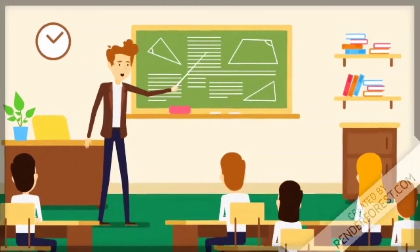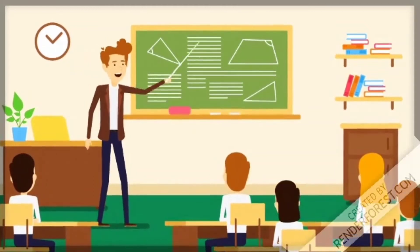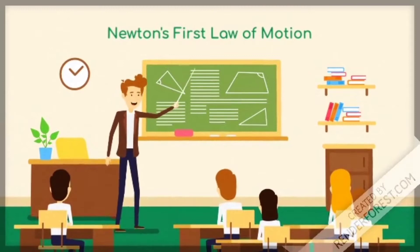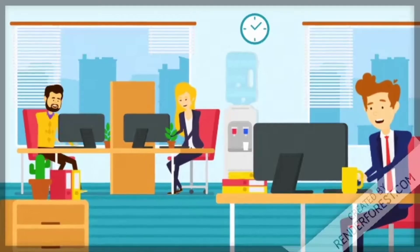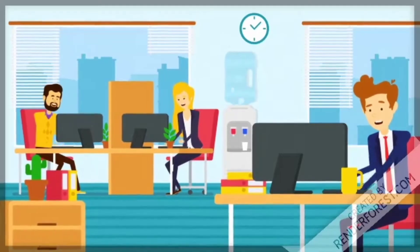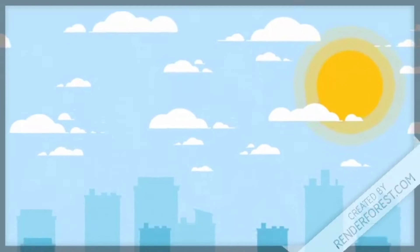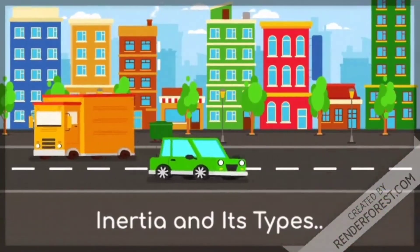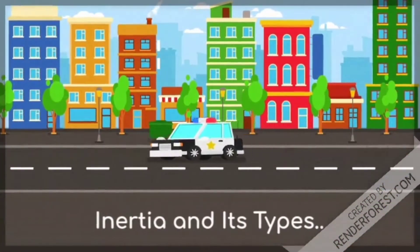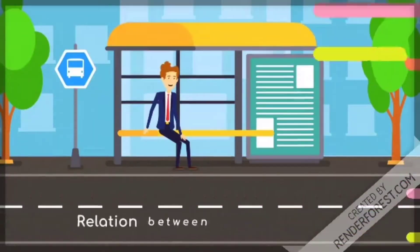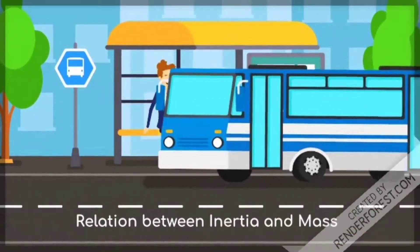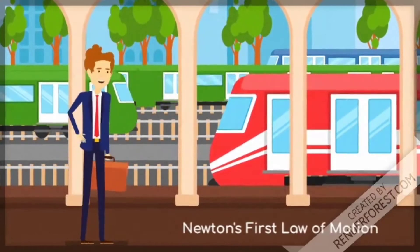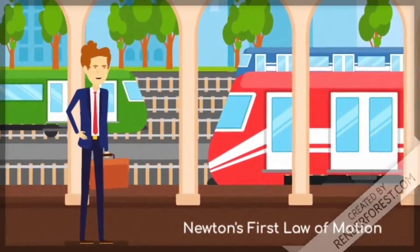In the last video, we discussed about Newton's first law of motion. If you have not seen it yet, go and click on the i button. Today, we will talk about inertia and its types. Also, we will see the relationship between inertia and mass, which is the extension of Newton's first law of motion.